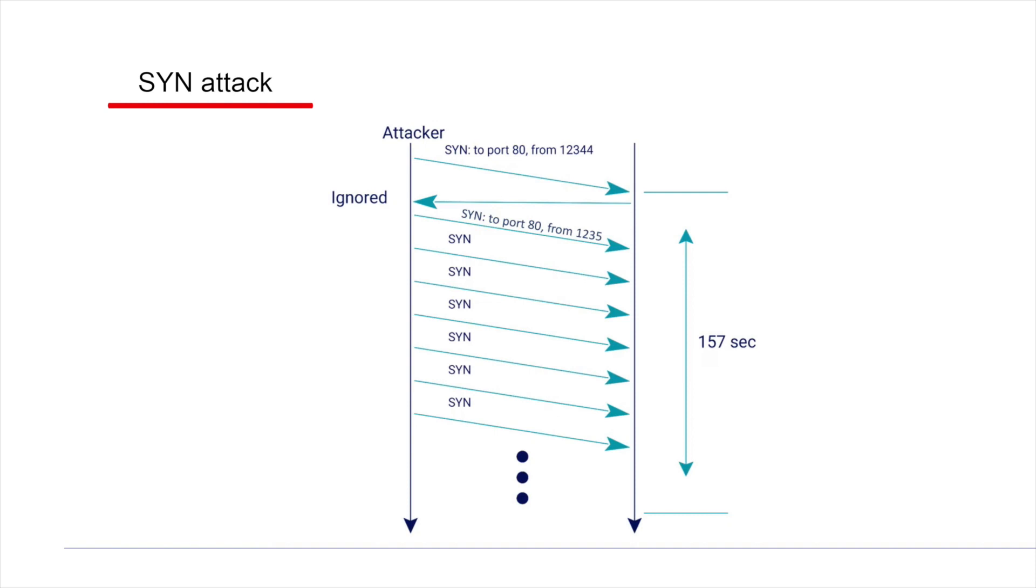So far, we have described the attack theoretically. But is the attack practical? How many requests can the attacker send over a time period of 157 seconds until the server starts freeing the memory it allocated? Will these requests consume enough memory for the server to crash? Let's look at an example.